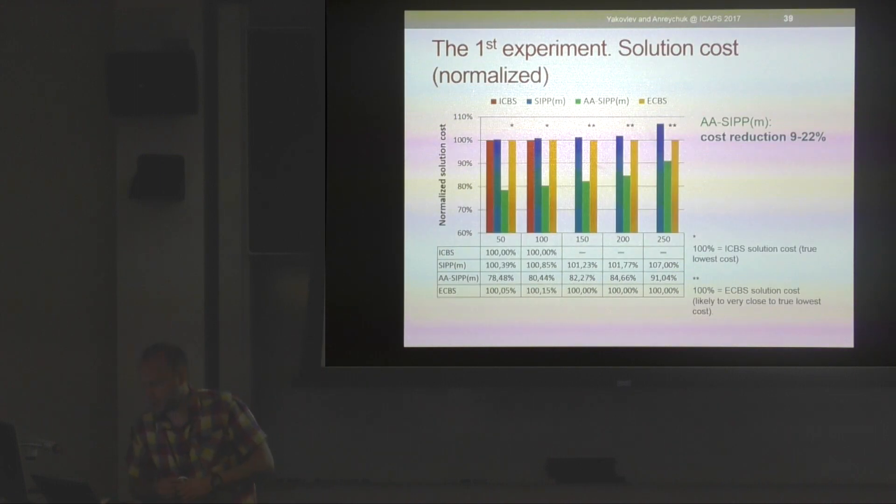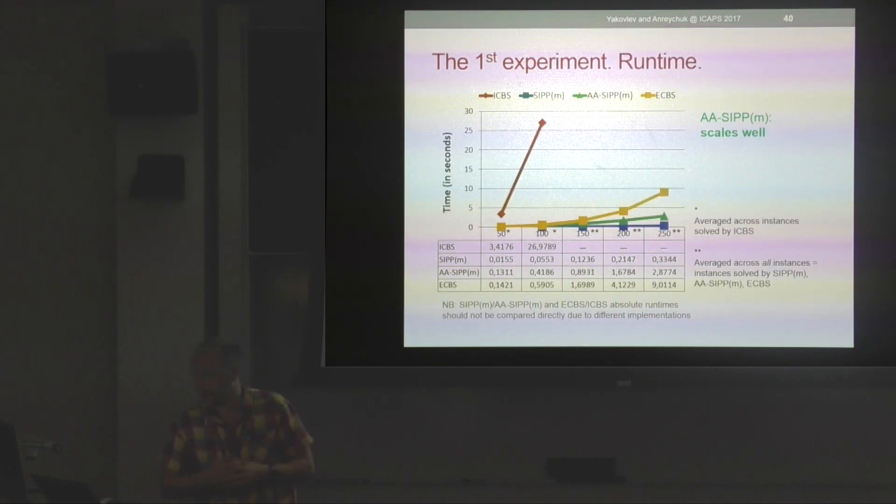Here's the success rate: it's 100 percent for AA-SIPP(m), no surprises here because all instances are well-formed infrastructures. The most interesting chart is solution cost. As one can see, there is a notable reduction in solution cost up to 22 percent. That's actually what we were looking for, right? We can greatly reduce the solution cost by introducing any-angle moves, and it looks like AA-SIPP(m) scales pretty well to large numbers of agents on empty grids.